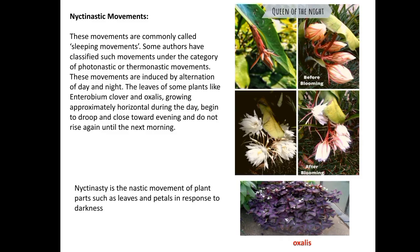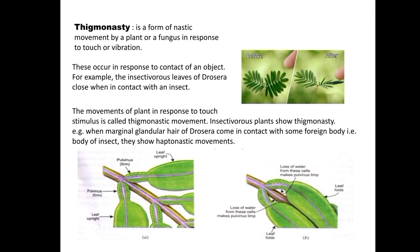Thigmonasty is the non-directional movement of a plant in response to contact with an object. In insectivorous plants like Drosera, tentacles show variation in movement on coming in contact with an insect — the stimulus of the insect's touch is transmitted to the entire leaf and all tentacles bend over the insect. Thigmonasty differs from thigmotropism: thigmotropism is a directional movement response involving a growth response rather than turgor-based movement. An example of thigmotropism is the coiling of tendrils upon contact with an object for support; an example of thigmonasty is the shutting of a Venus flytrap.